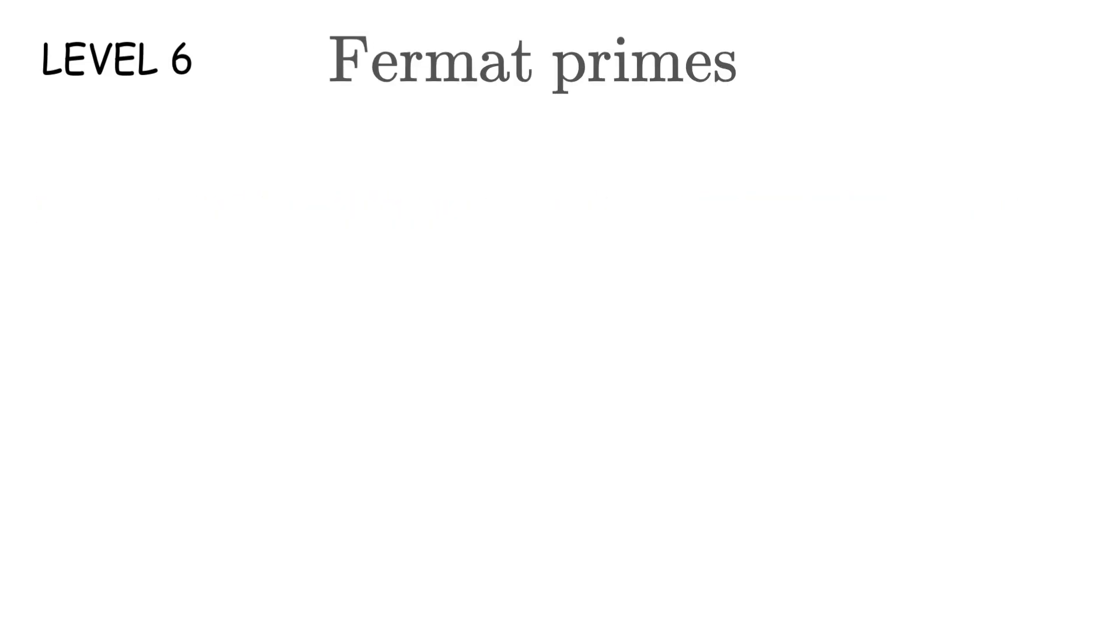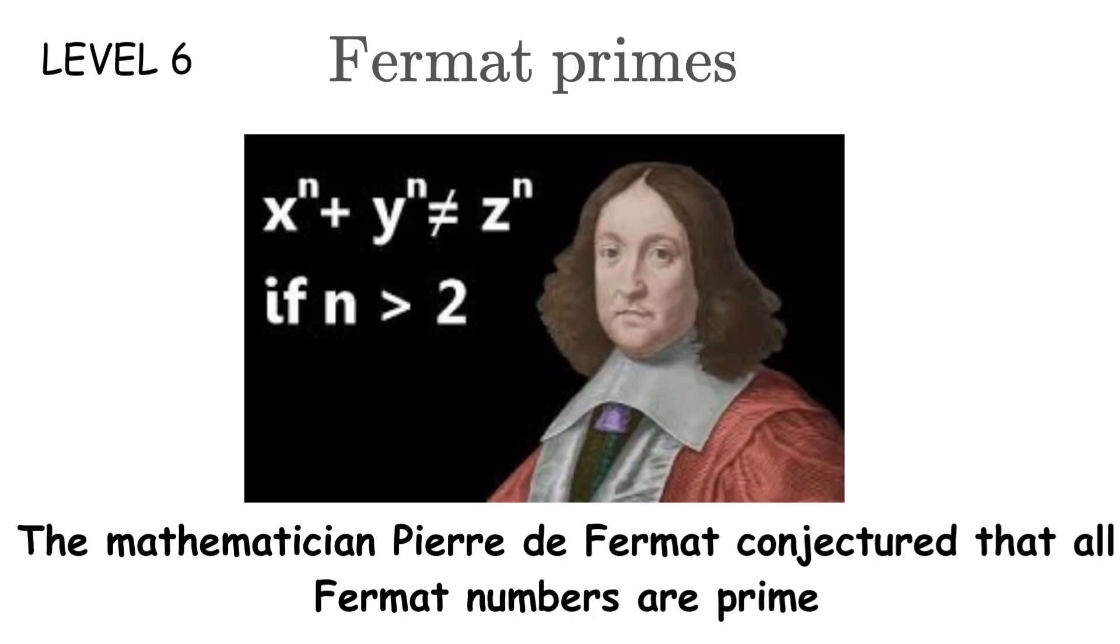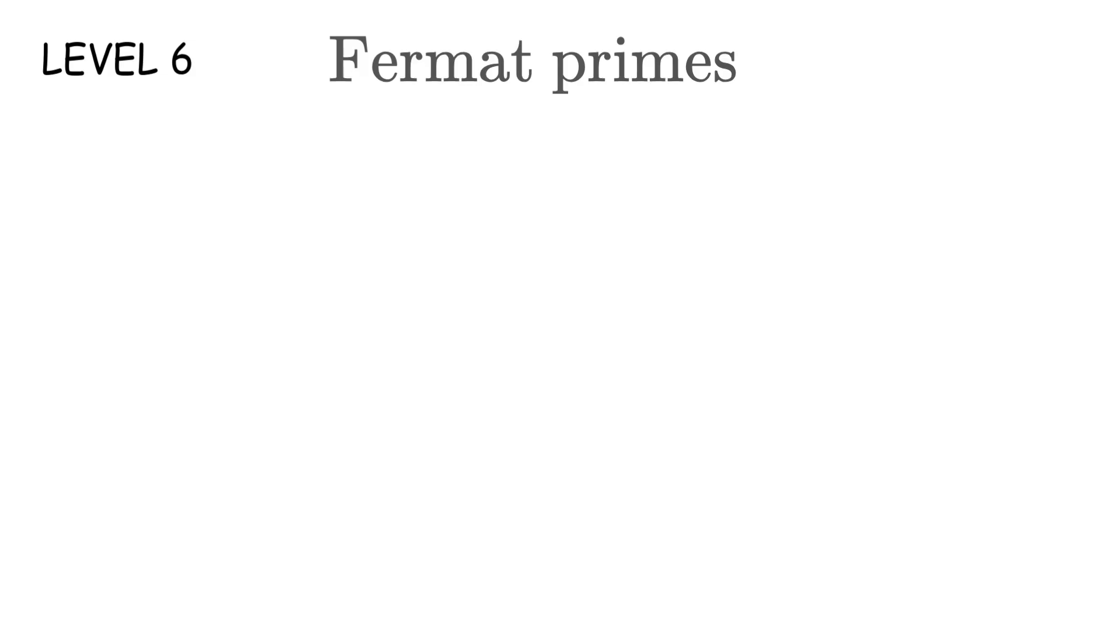Level 6. Fermat primes. These ones are almost extinct. A Fermat number is defined as F_n equals 2 raised to the power of 2 raised to the power of n plus 1. So you take 2, raise it to the power of 2 raised to the power of n, then add 1. The mathematician Pierre de Fermat conjectured that all Fermat numbers are prime. He checked the first few and they worked, so he assumed the pattern would continue forever.